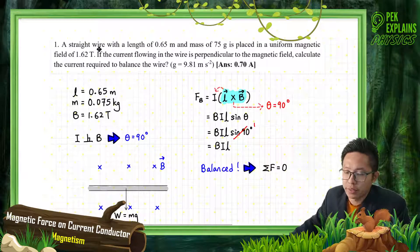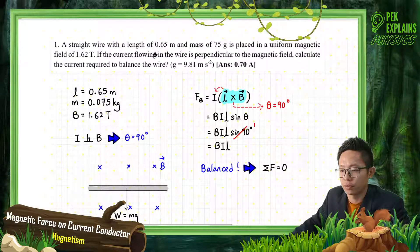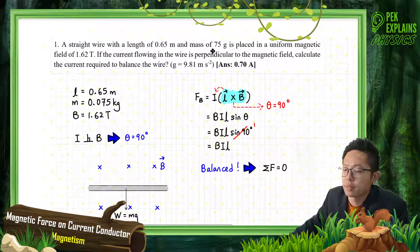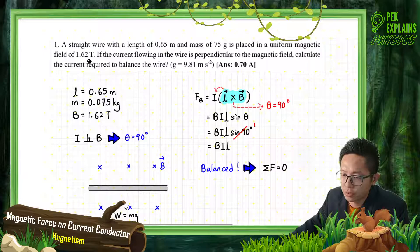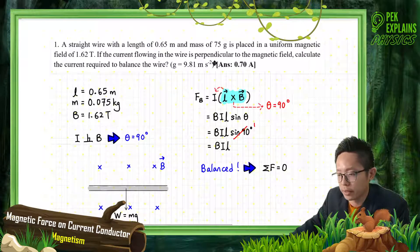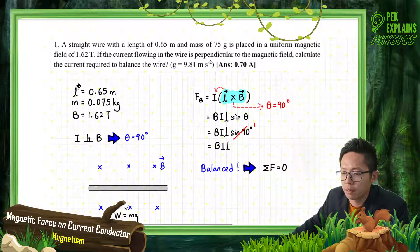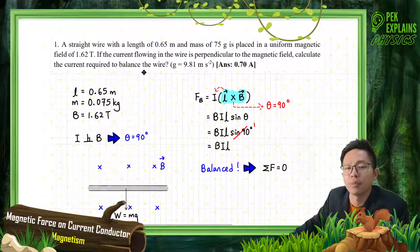A straight wire with a length of 0.65 meter and mass 75 grams is placed in a uniform magnetic field of 1.62 Tesla. If the current flowing in the wire is perpendicular to the magnetic field, calculate the current required to balance the wire.